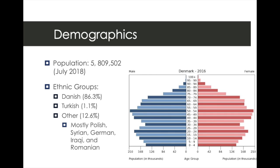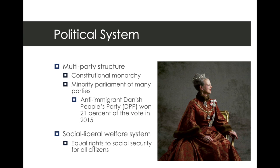Otherwise they're identifying people who identify as Turkish, as well as Polish, Syrian, German, Iraqi, and Romanian. Note the increase in Syrian refugees after 2015.